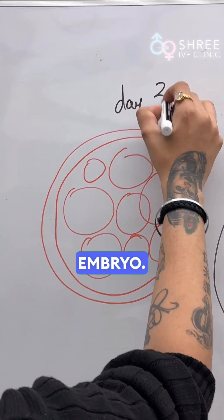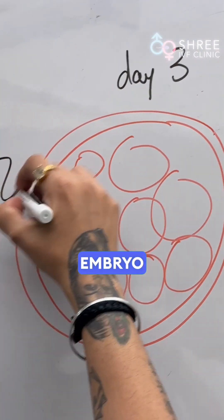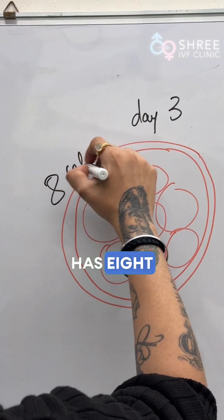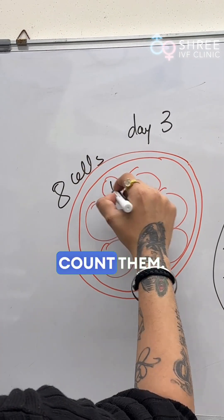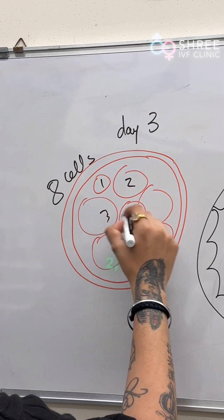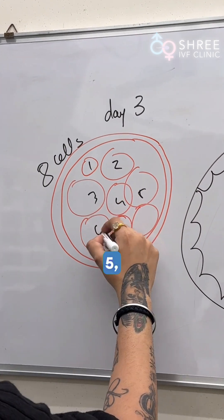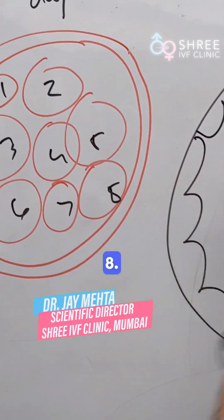Friends, this is your day 3 embryo. A day 3 embryo typically has 8 cells. You can count them: 1, 2, 3, 4, 5, 6, 7, 8.